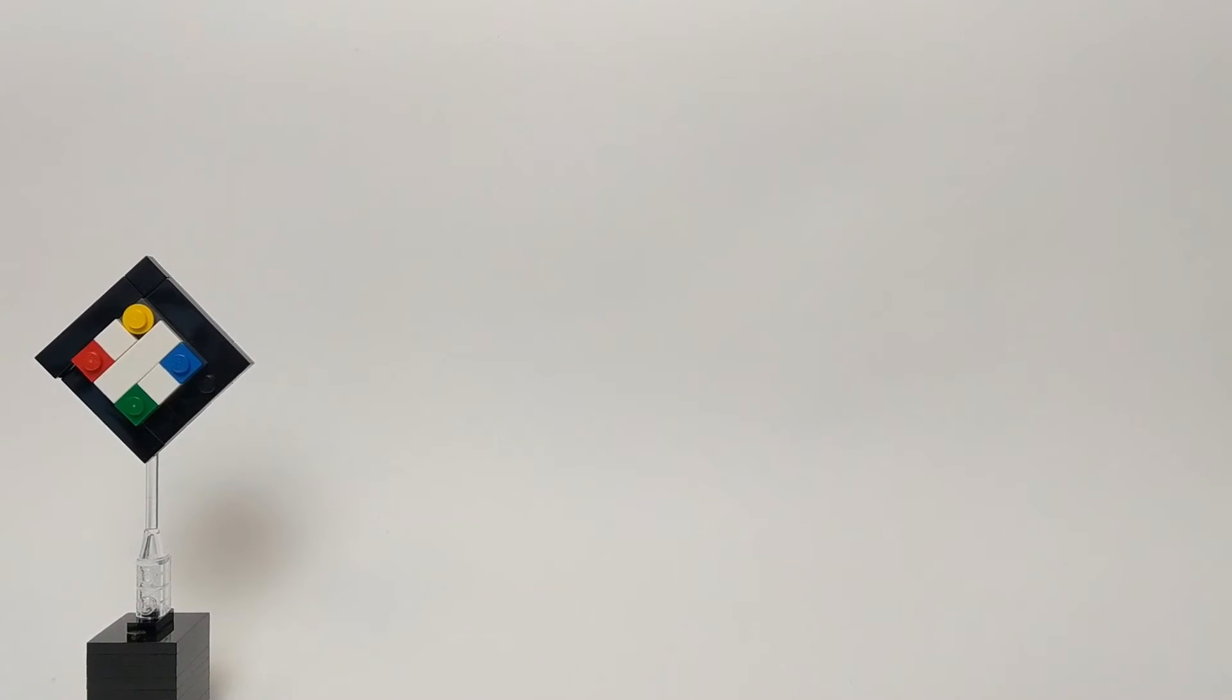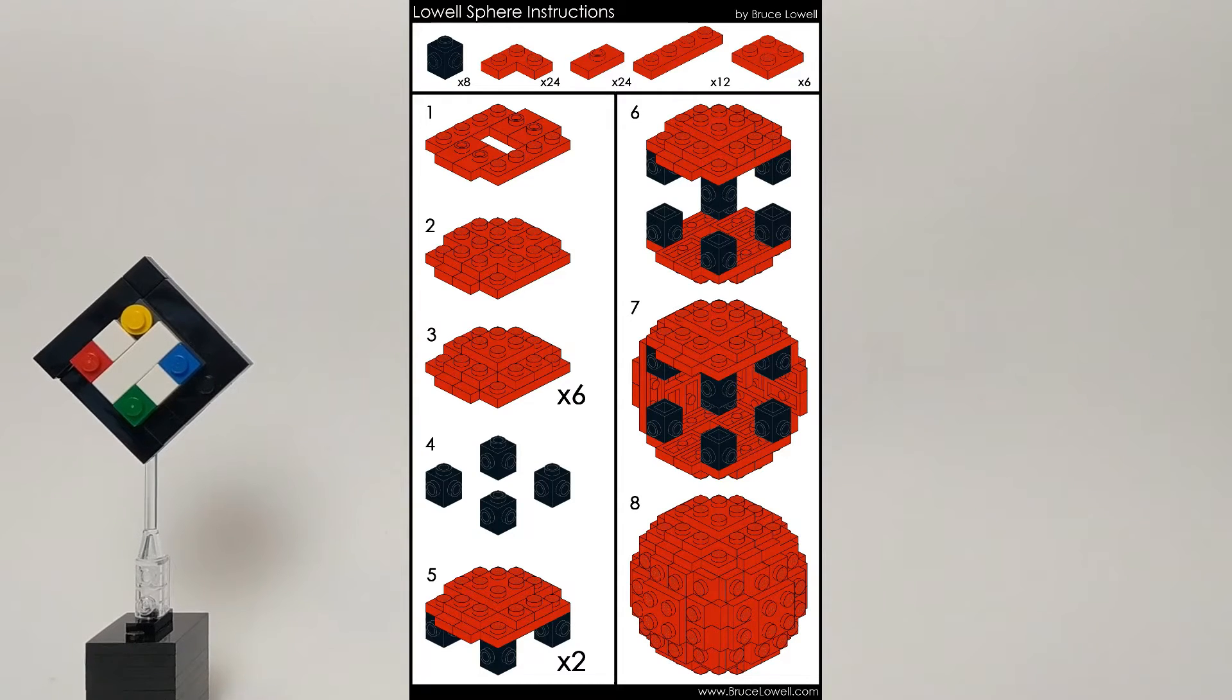Next up, one of the most popular SNOT-based spherical designs of all time is the Lowell Sphere. Here you can see how Lowell Sphere goes together. Using repeating shapes and, again, the Travis bricks and their studs on all sides capabilities, you're able to build in all six directions. And using the plate stepping between each layer, you can see that you create a rounded-like shape for each side.